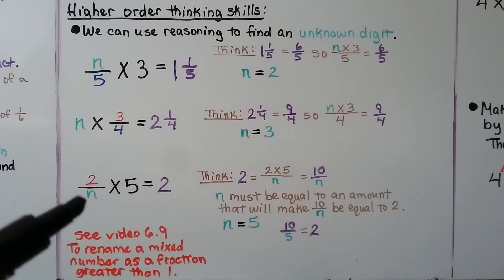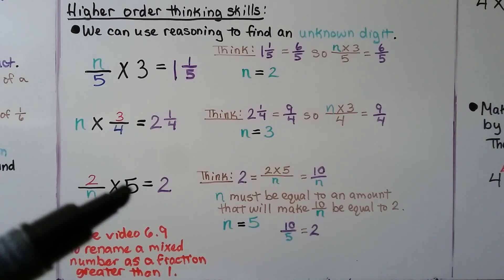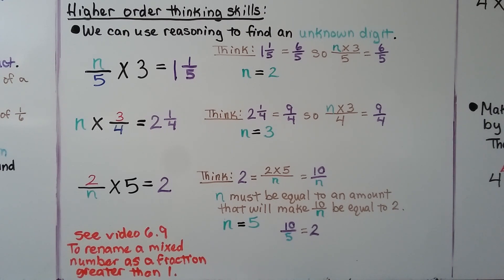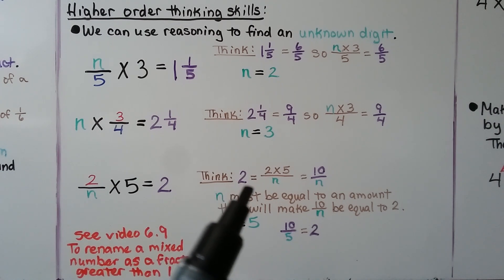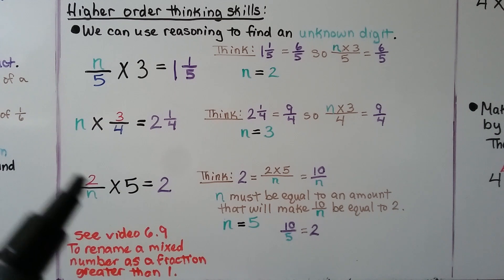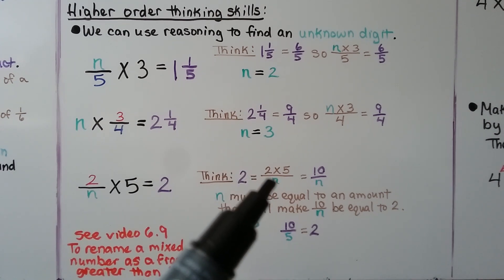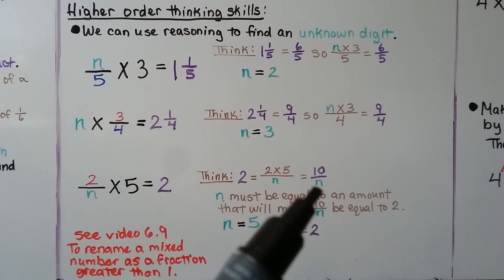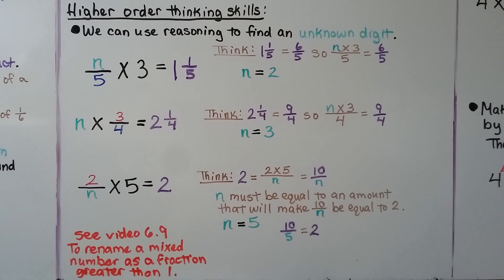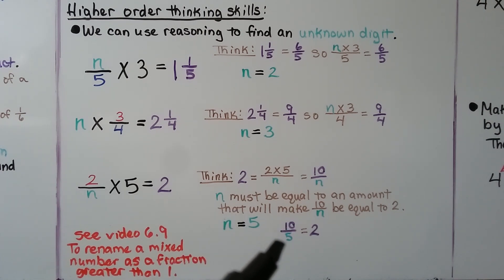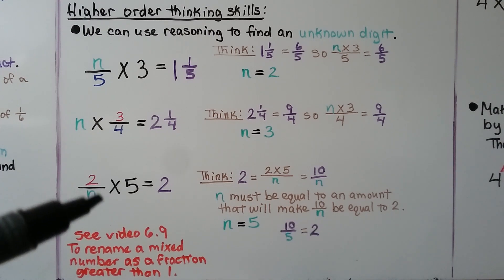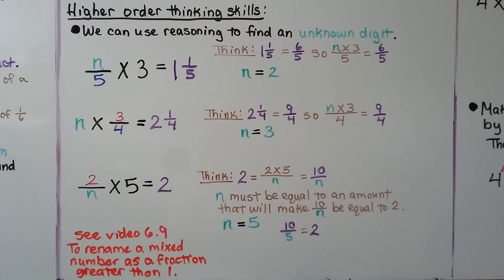Here we have 2 over an unknown denominator, times 5 (a whole number), and it's equal to 2. We have 2 times 5 as the numerator over some number n — we don't know the denominator. That would be 10 over n. n must be an amount that makes 10 over n equal to 2. If we use 5 — 10 over 5 equals 2 — so n must equal 5. The denominator must be 5.